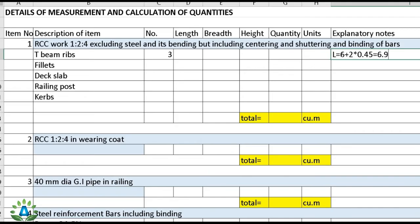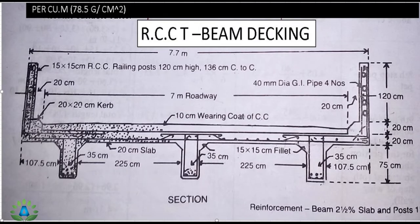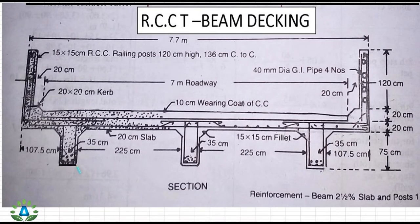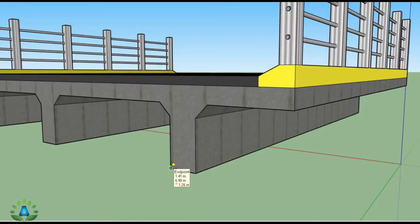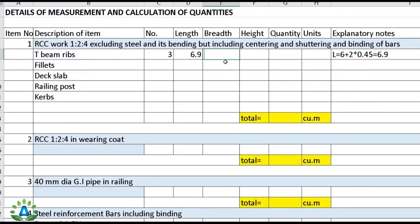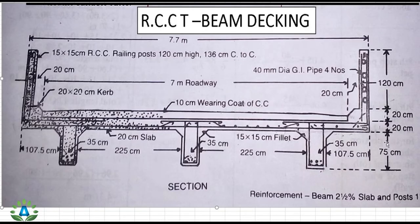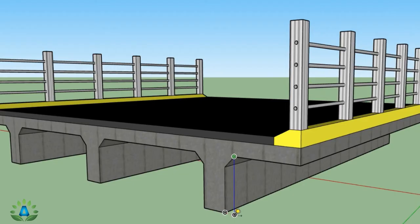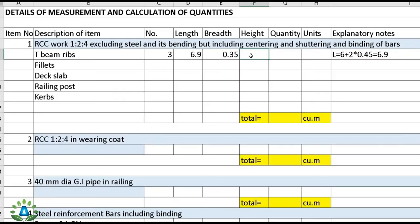The width of the RCC beam is 35 centimeters, so width = 0.35 m. The height of the T-beam is 75 centimeters, so height = 0.75 m. With number = 3, length = 6.9 m, width = 0.35 m, and height = 0.75 m, the total quantity of RCC in the T-beam ribs is 5.434 cubic meters.